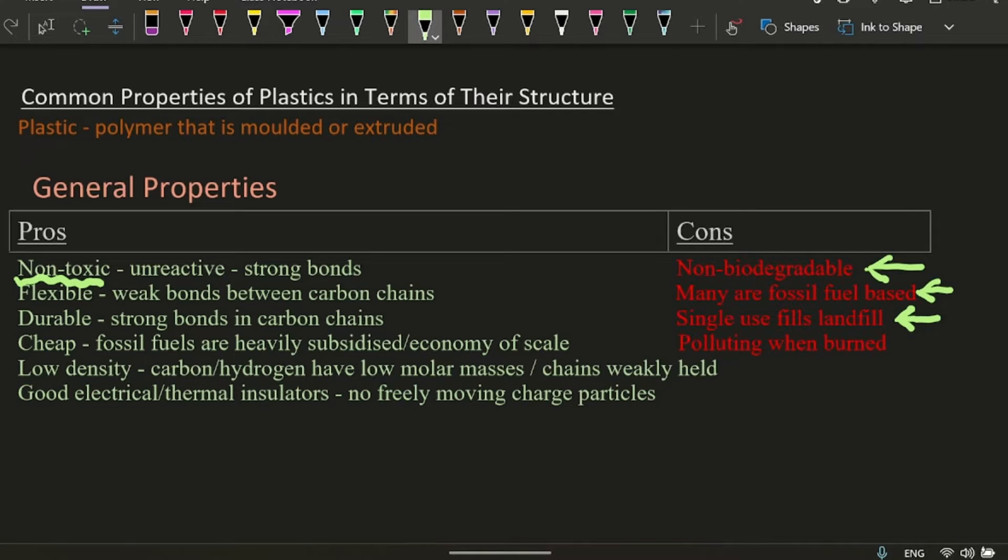They have low density. Most of them float on water, for example, and that's because carbon and hydrogen have low molar masses and those chains are quite weakly held together, which gives it a lower density as well. There's less mass per unit volume.